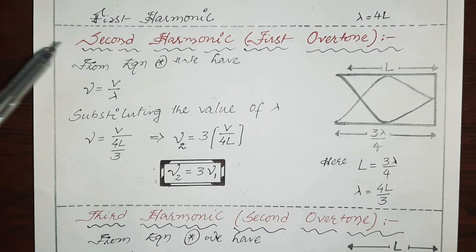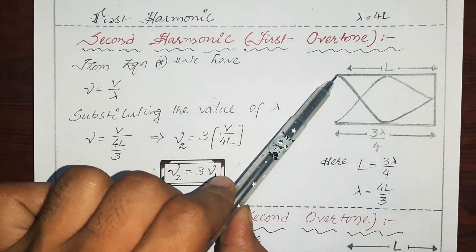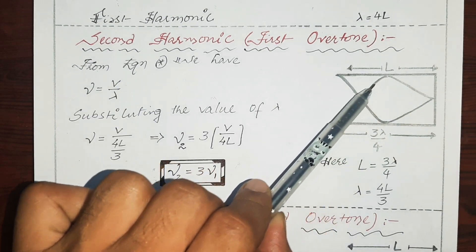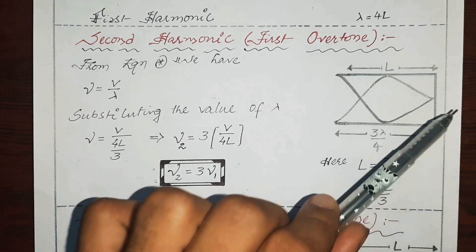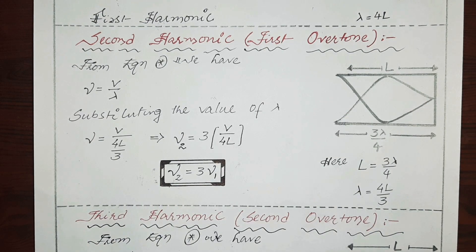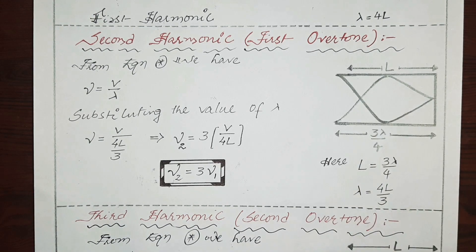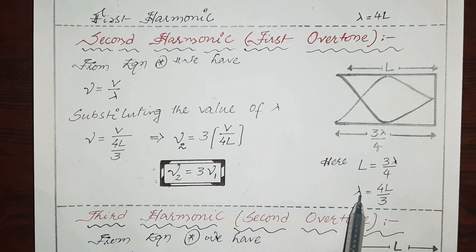Now let's proceed towards the second harmonic. In finding the second harmonic, we have taken the same pipe with length L. If we send the progressive wave from the open end, it travels towards the closed end, reflects back and forms a stationary wave. As we know, at the open end an antinode is always formed, and at the closed end a node is always formed. This time the pipe vibrates with one and a half loops, corresponding to 3 lambda by 4. The distance from here to here is lambda by 2 and the distance from here to here is lambda by 4, so lambda by 2 plus lambda by 4 equals 3 lambda by 4. We can equate L and 3 lambda by 4, so L equals 3 lambda by 4.